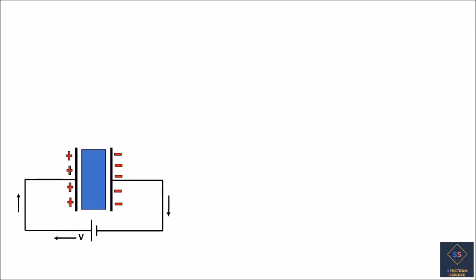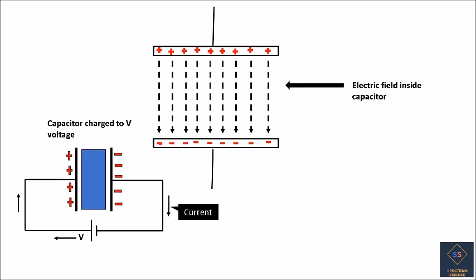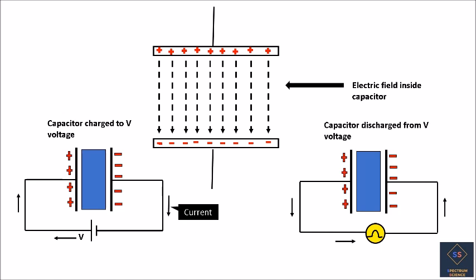When a voltage is applied across the capacitor it gets charged up to the same voltage level. Energy provided by the battery is stored in the electric field of the capacitor. When this charged capacitor is connected across a load it drives the load — the bulb glows when connected across the charged capacitor. Unlike a resistor which dissipates energy, a capacitor stores energy in the form of an electric field, which can be retrieved at a later time.